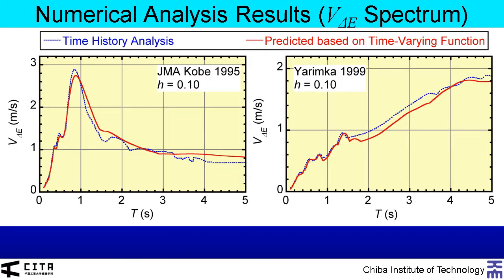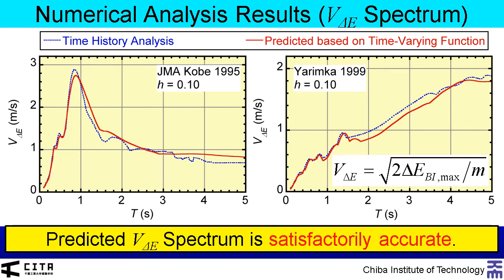Here shows the comparisons of the maximum momentary input energy spectrum calculated from time history analysis and time-varying function. Here, vΔe is the equivalent velocity of the maximum momentary input energy. As shown here, the predicted vΔe spectrum is satisfactorily accurate.